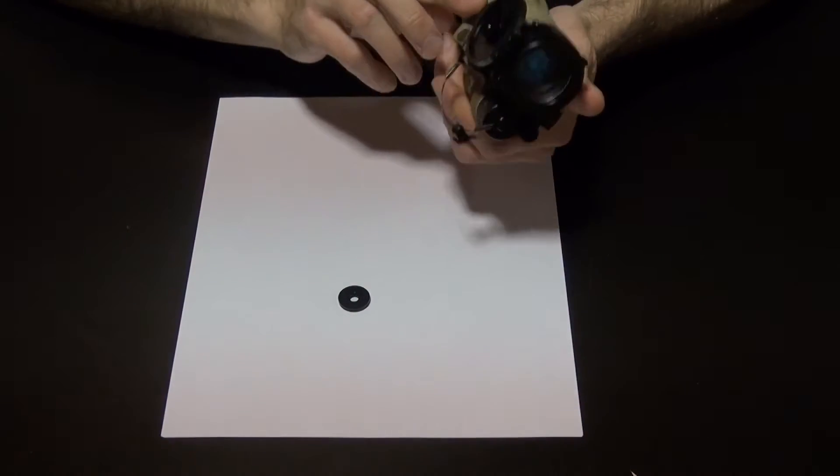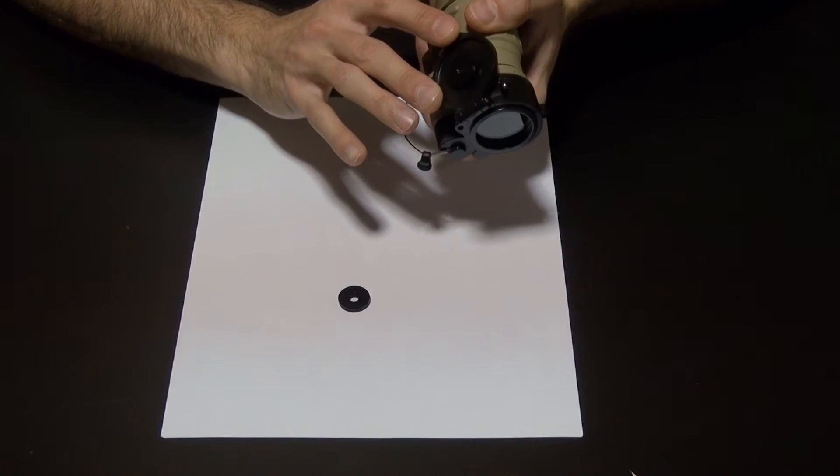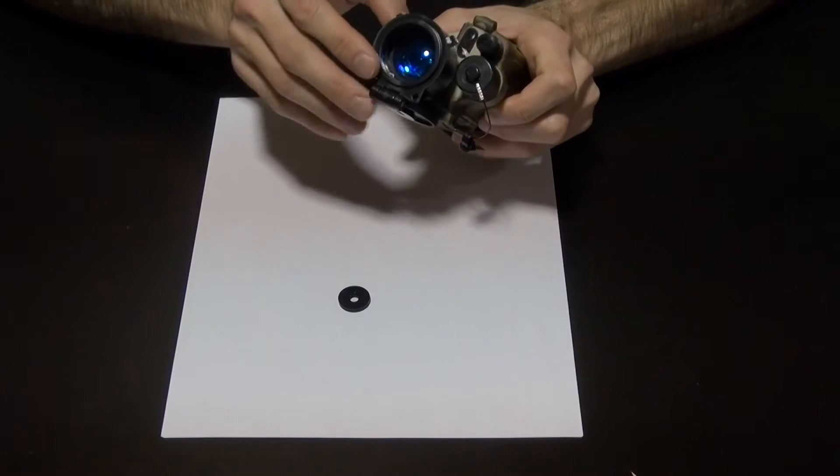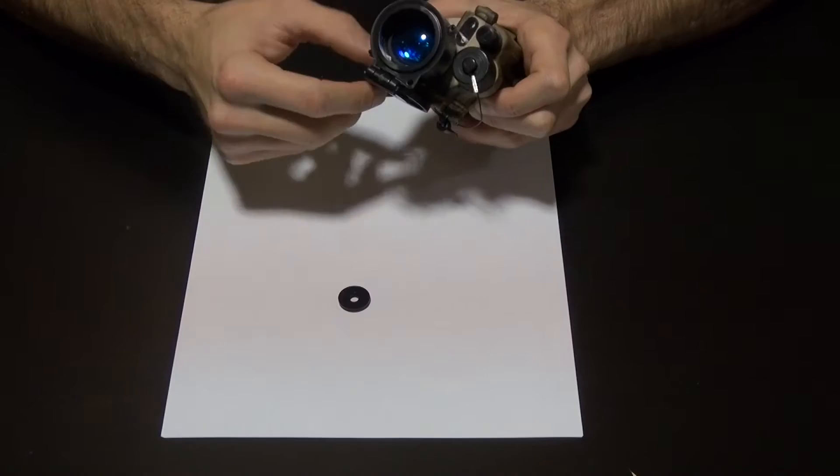When you flip it open, it rests safely and flat against the goggle so it won't get in the way, and you've got your standard objective opening. It also doubles as a sacrificial window.